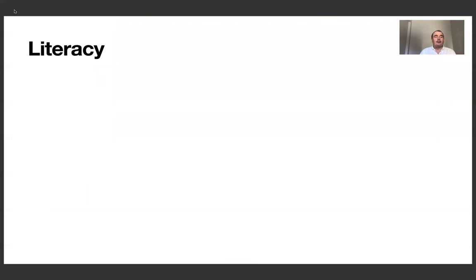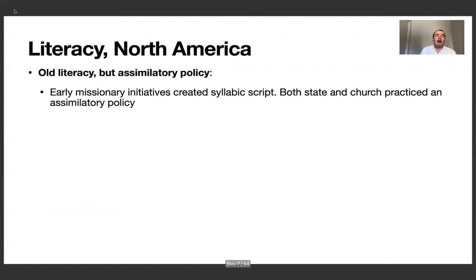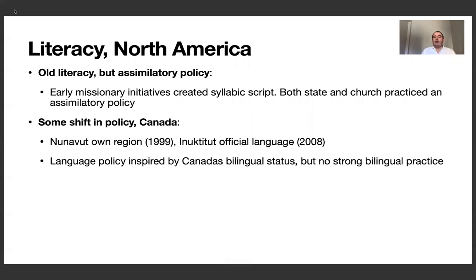Turning now to literacy, looking first at North America and looking at the background. In North America, the minority languages have an old literary tradition, stemming from early missionary initiatives creating syllabic scripts. And then the syllabic scripts were spread actually faster than the missionaries themselves. But despite this eager use of syllabic scripts in literacy, both state and church practiced a very harsh assimilatory policy. So in Canada, there has been some shift in policy, especially in the country, and their language policy is inspired by Canada's bilingual status with English and French. But still for the First Nation languages of Canada, there is no strong bilingual practice.